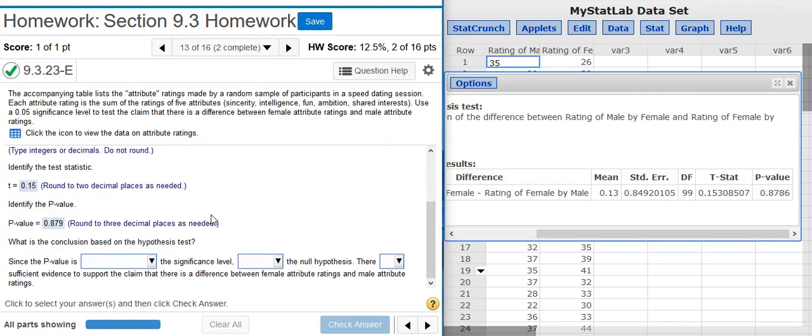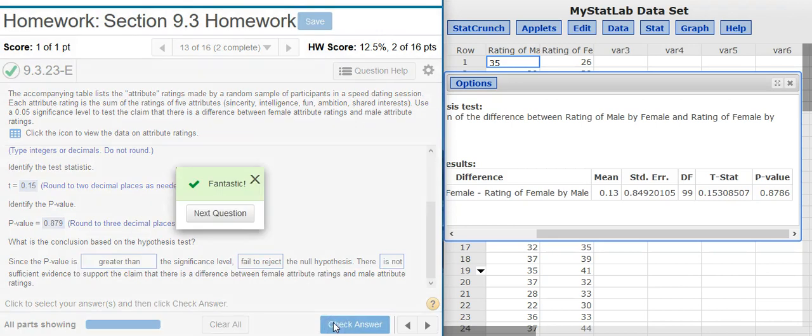And now the last part of the problem asks us to make a conclusion on the Hypothesis Test. The first thing we need to do is compare the p-value with the significance level. We were given a significance level of 5% here in the problem statement. Our p-value, way more than 5%, we're almost at 88%, so we're definitely greater than 5%. So the p-value is greater than the significance level. Because the p-value is greater than the significance level, we are outside the region of rejection. Therefore, we're going to fail to reject the null hypothesis. And because we fail to reject the null hypothesis, there is not sufficient evidence. I check my answer. Fantastic!